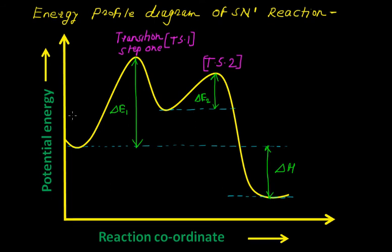This is the energy profile diagram of SN1 reaction. We have starting reactants over here, so let me write reactants, and finally here we get products. The energy profile diagram of SN1 mechanism shows why rate of reaction is independent of the concentration of nucleophile, that is NaOH.